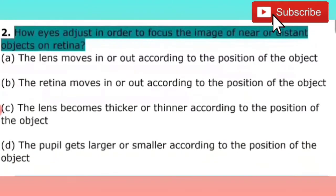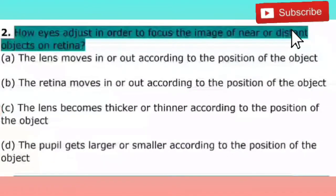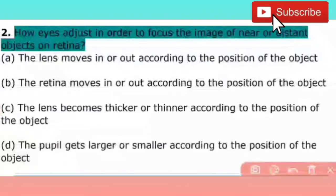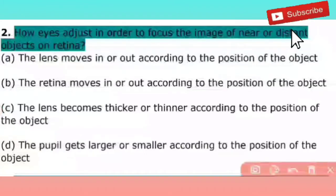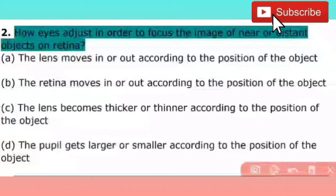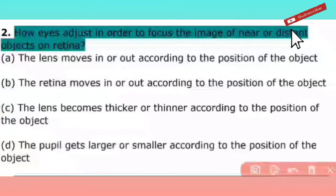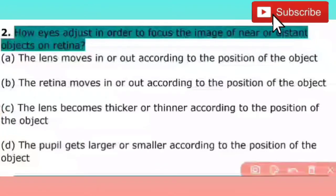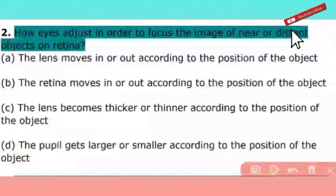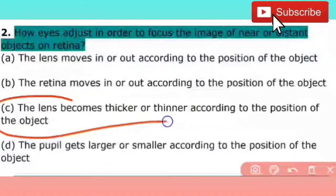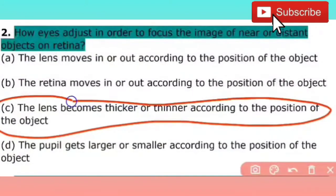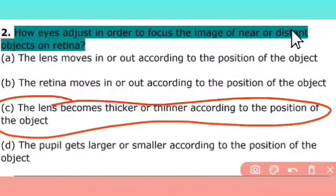The next question is: How does the eye adjust in order to focus the image of a near or distant object on the retina? It has 4 options: the lens moves in or out according to the position of the object; the retina moves in or out; the lens becomes thicker or thinner according to the position of the object; the pupil gets larger or smaller. So the right answer is C — the lens becomes thicker or thinner according to the position of the object.